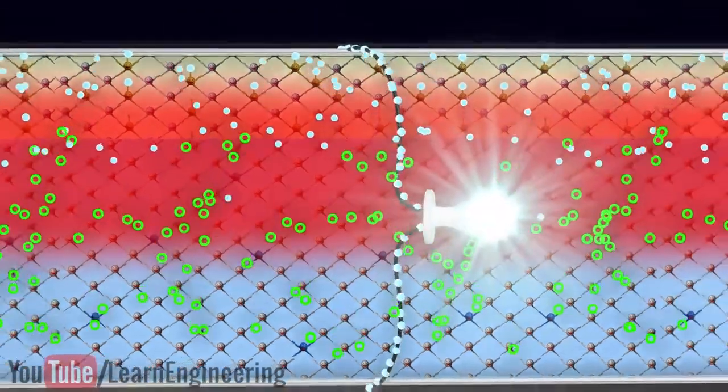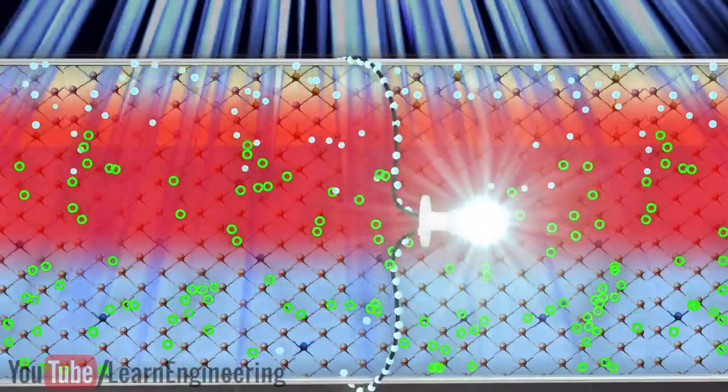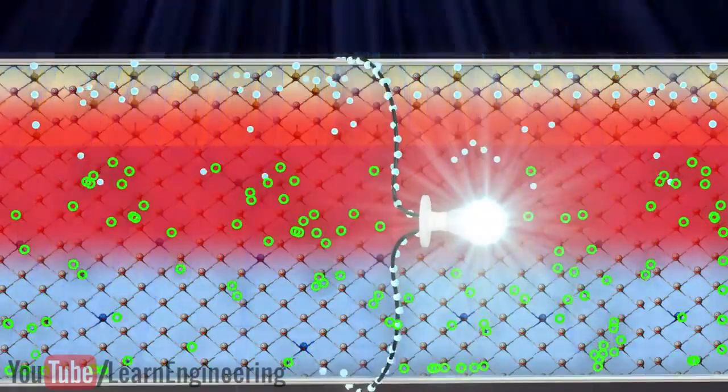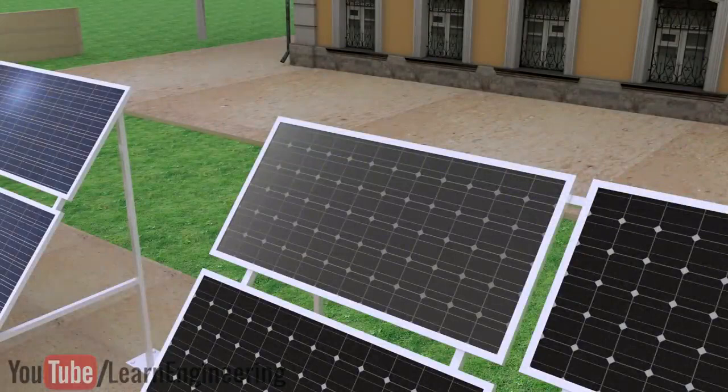The other advantage is that, due to the thin top layer, more light energy can reach the depletion region. Now, let's analyze the structure of a solar panel.